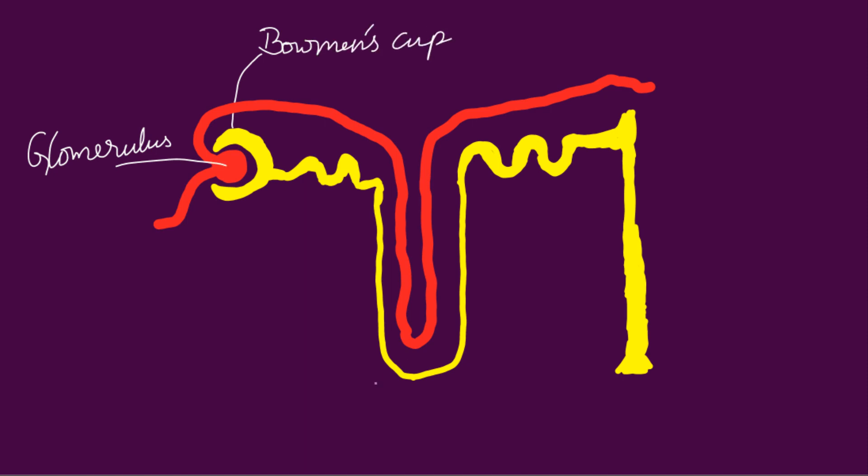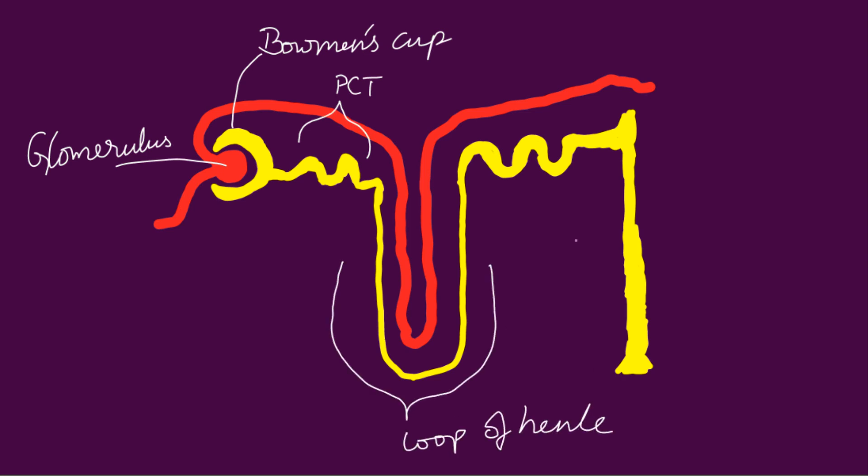To better understand the mechanism of actions, let us quickly take a look into salt and water flow across the nephron. Here is a basic diagram of the nephron. As you know, a nephron is a structural and functional unit of the kidney. The first part is called the glomerulus — a sac-like structure lodged inside a cup called Bowman's cup. The glomerulus drains excess fluid and salt from the capillaries into the Bowman's cup, which then opens into the proximal convoluted tubule, which bends into the loop of Henle and continues as the distal convoluted tubule.